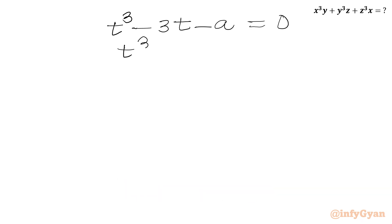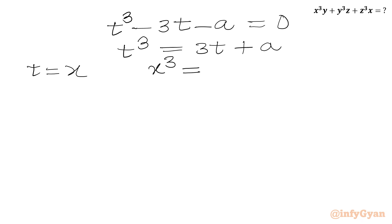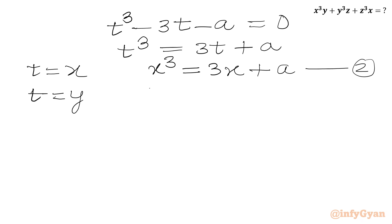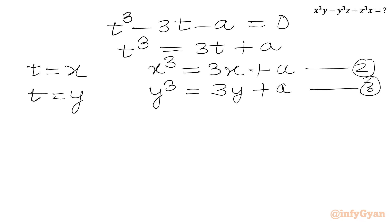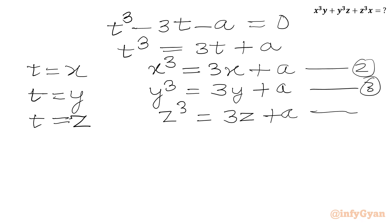Now we know that roots of this cubic equation are x, y, and z. I can write t cubed equals 3t plus a. Since t equals x satisfies this equation, x cubed equals 3x plus a — equation number 2. Similarly, y cubed equals 3y plus a — equation number 3. And z cubed equals 3z plus a — equation number 4.